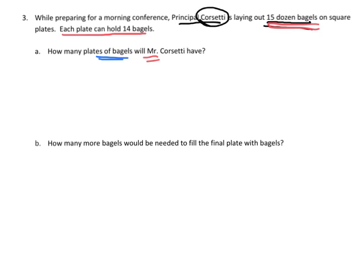First question: how many plates of bagels will Mr. Corsetti have? The first thing we have to do is figure out how many bagels do we have. We know we bought 15 dozen bagels, so that means it's going to be 15 times 12. That's 10, carry the 1. 2 times 1 is 2, plus 1 is 3. Put the 0 because this is not really a 1, that's really a 10. So 1 times 5 is 5, 1 times 1 is 1. We add those together we get 180.